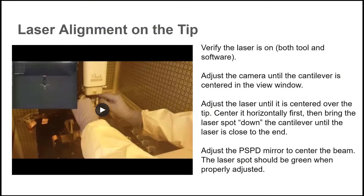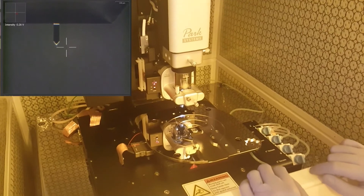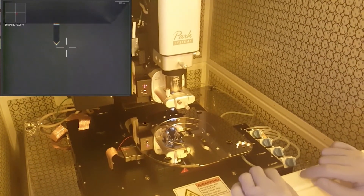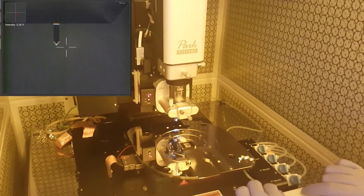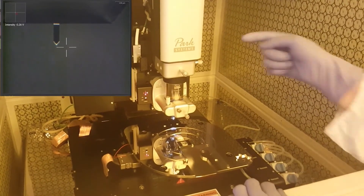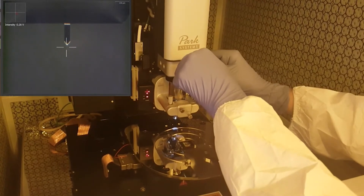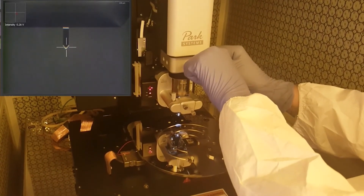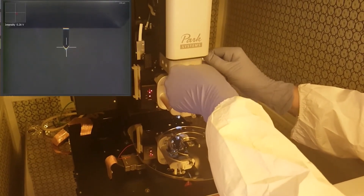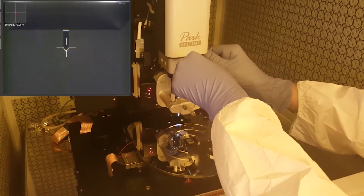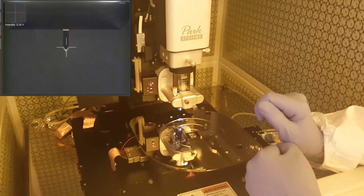To align the laser, there are three sets of adjustment knobs to use, and you'll move from the top set down. First, verify the laser is on. Then adjust the camera so the cantilever is centered. Adjust the laser so that it is correctly aligned, and adjust the PSPD to center the beam in the detector. The first thing to do is get the end of the cantilever centered in the camera view using the two camera knobs, with the end centered in the white guides. Note that on PPP NCHR tips, the tip is not at the very end — it's a little further back, where the triangle part of the narrow cantilever ends.